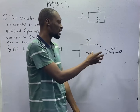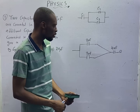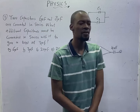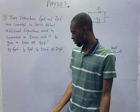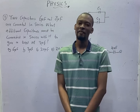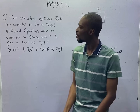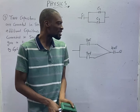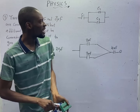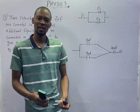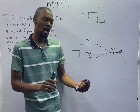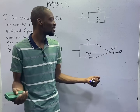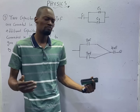Given this type of diagram, there are ways questions will come. The first is: calculate the net capacitance. Or they say, find the equivalent capacitance. Or, find the total capacitance. Then you may be asked to find the energy stored in the capacitor — that is exactly our focus for the next episode: energy stored in capacitors.